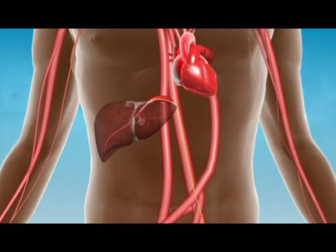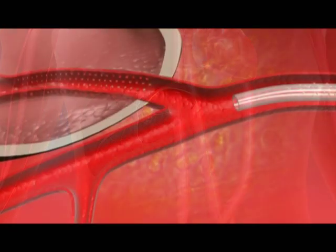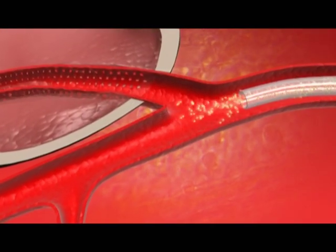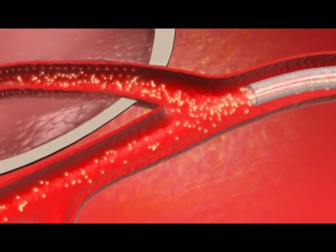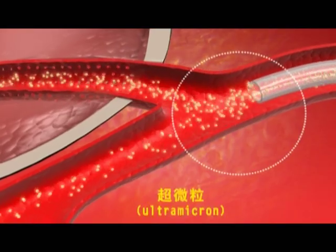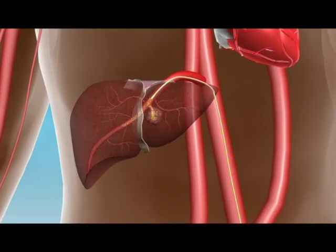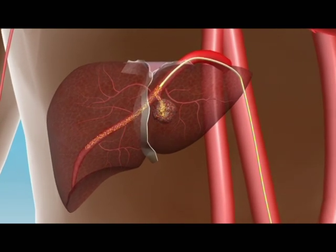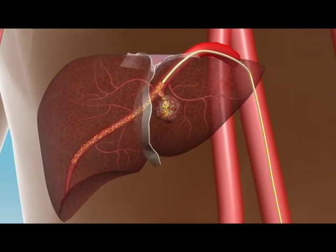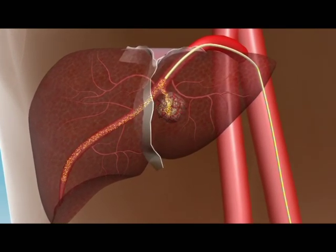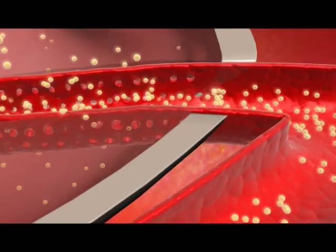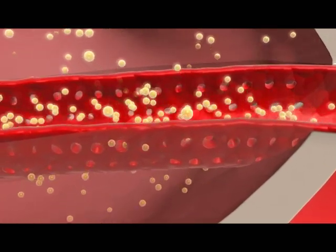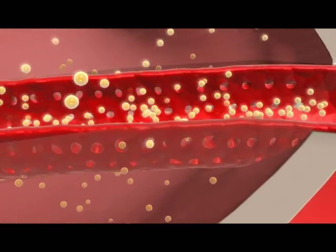Ultramicron drug particles are injected into the front part of the catheter, where the capillaries that provide blood supply to the tumor are adjacent. Some parts of the drug would be removed out of the human body through normal blood vessels, whereas others would be leaked into the tumor tissues through the interspaces of the tumor blood vessels.